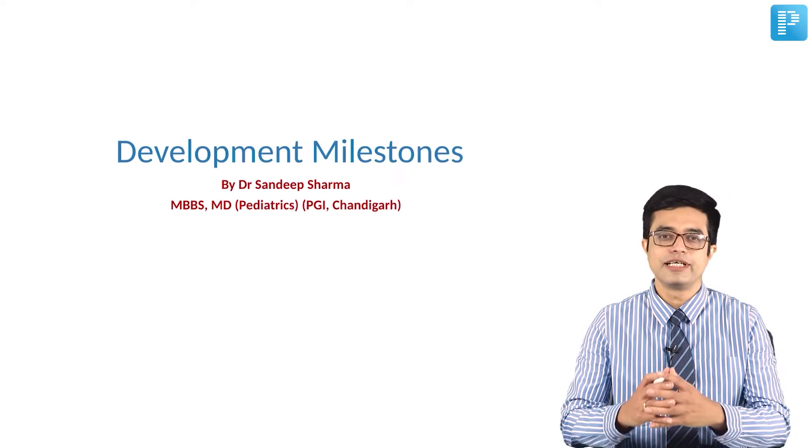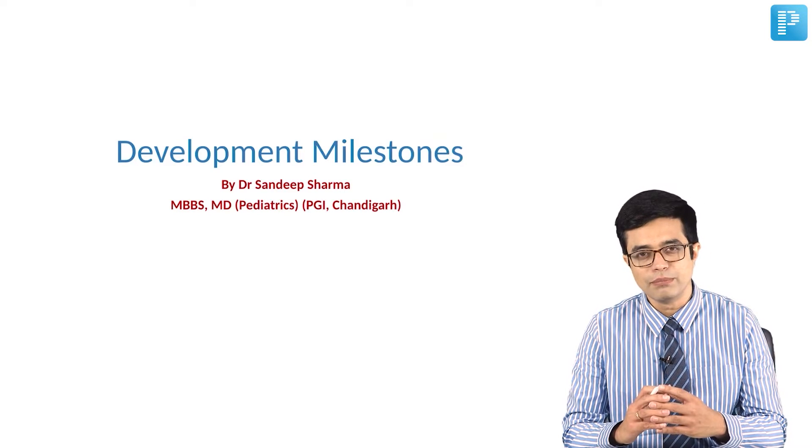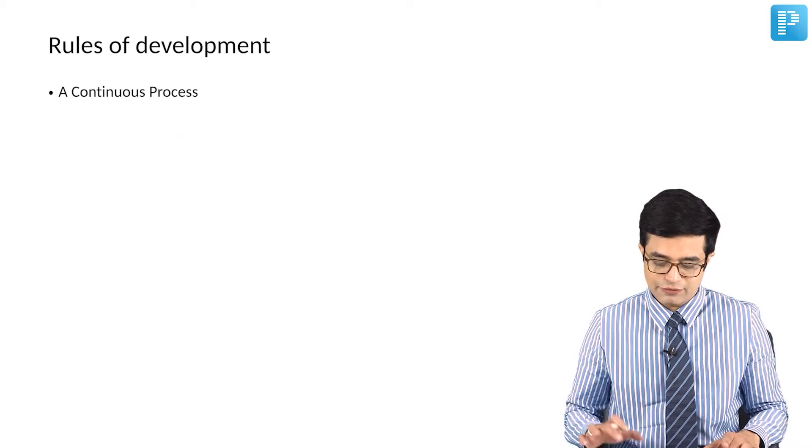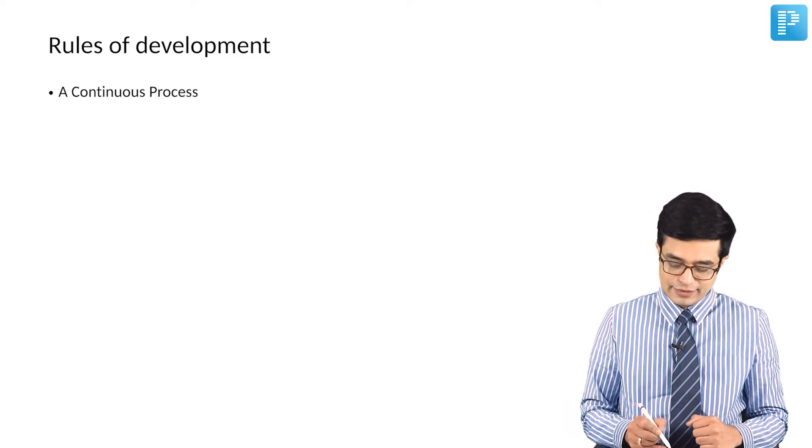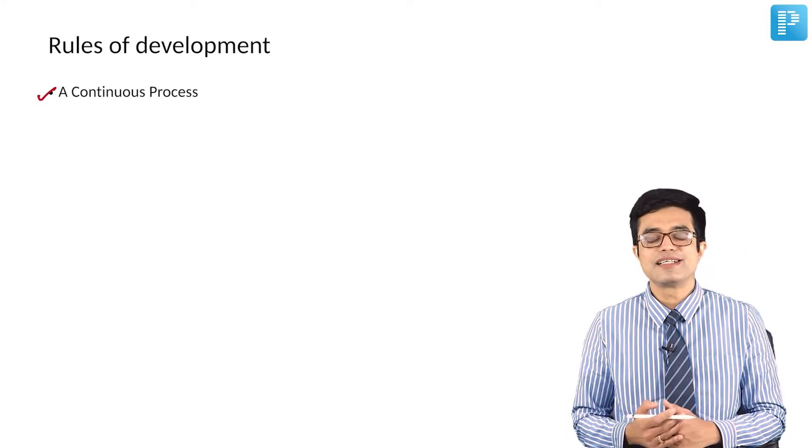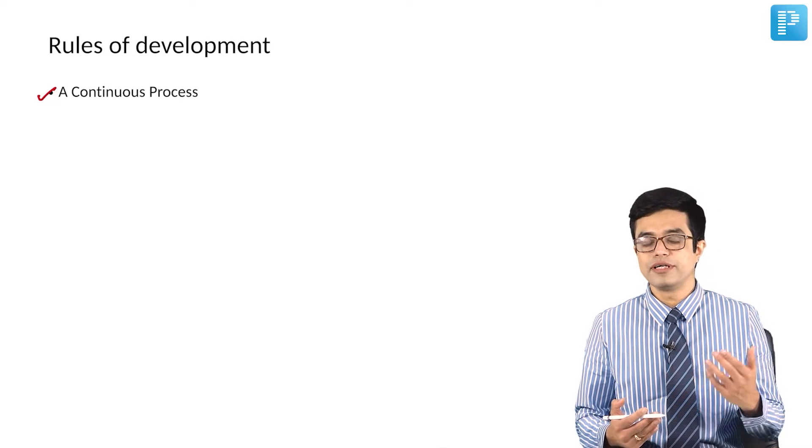You know that development refers to the maturation of functions. When we talk about development, there are six rules of development that you need to know. The first rule of development is that it is considered to be a continuous process. Development starts in utero and continues throughout life. We keep on learning something every day.